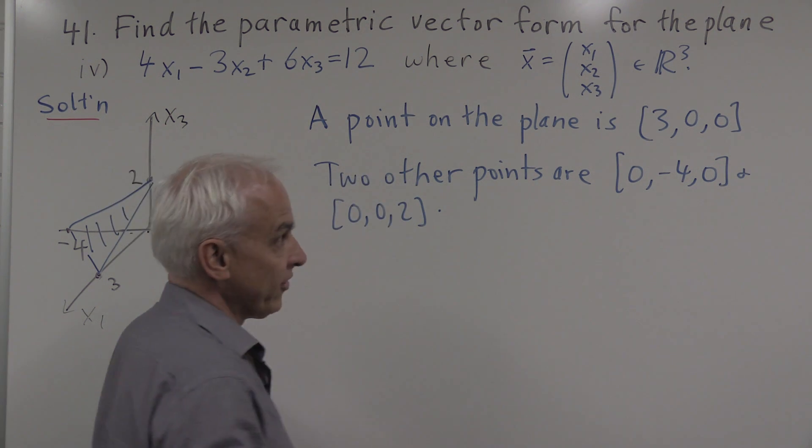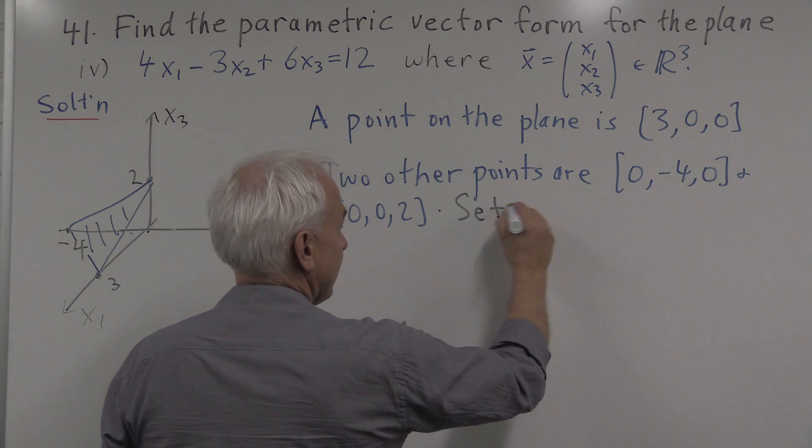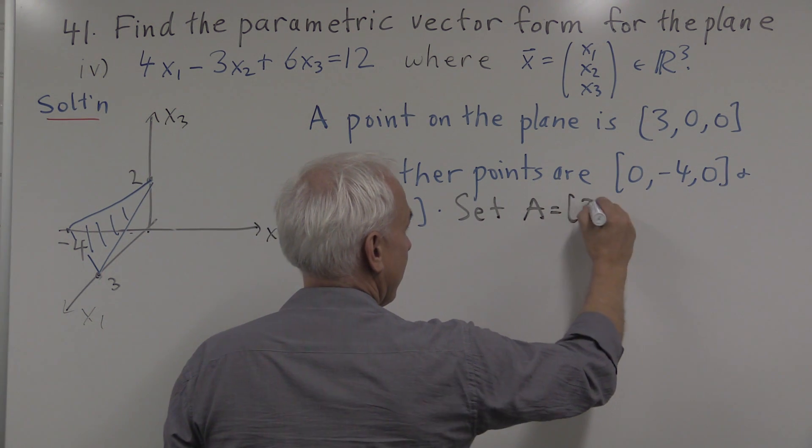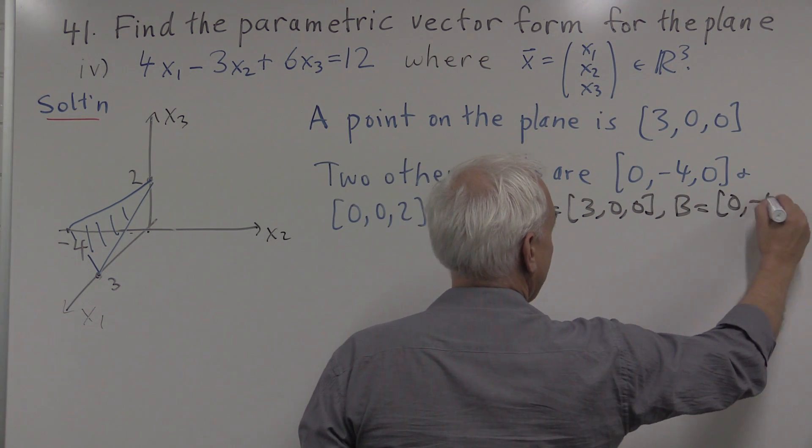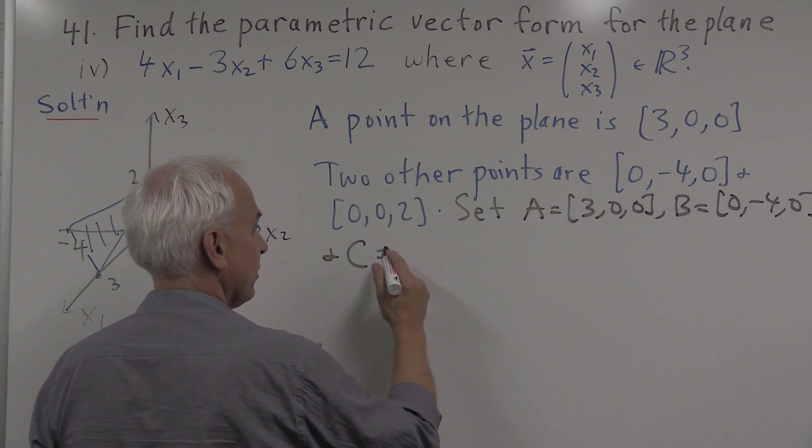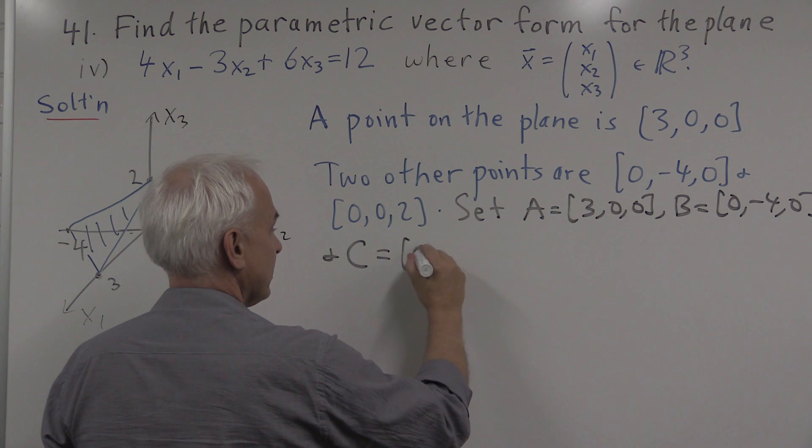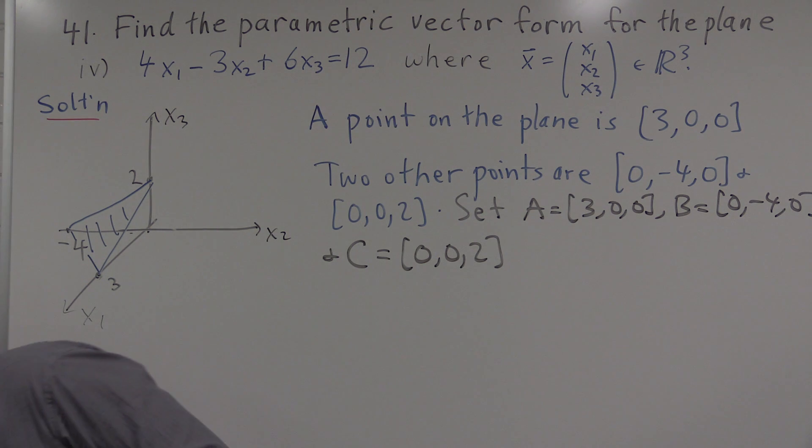So maybe we could give those some names. We could call this one, so let's set A equal to three, zero, zero. B equal to zero, minus four, zero, and C equal to zero, zero, two.